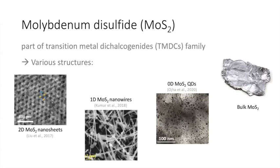Molybdenum disulfide, or MoS₂, is an inorganic compound that belongs to a famous group of 2D materials, the transition metal dichalcogenides. It has unique crystal and band structures, which make it an attractive material for next-generation semiconductor devices. The structures of MoS₂ differ at different dimensions. MoS₂ exists in 2D as nanosheets and nanoribbons, and in 1D as nanowires and nanotubes. It also has 0D structures like quantum dots and nanoplatelets, and it is a silvery black solid in its bulk form.